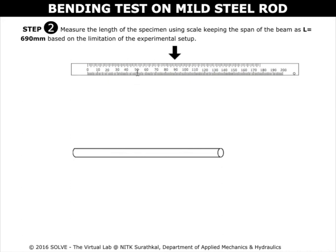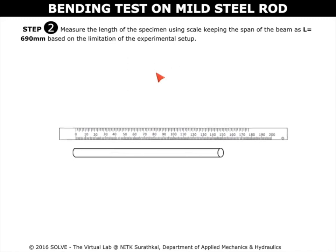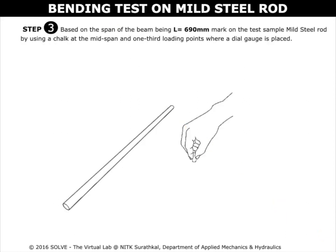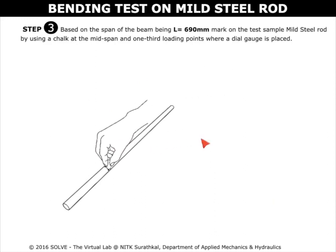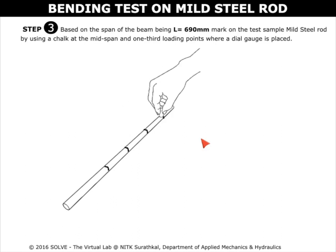Click here to measure the length of the specimen using a scale, keeping the span of the beam at 690 mm. Click on the hand with chalk to mark the mid-span and one-third loading points of the sample based on the span of the beam being 690 mm.